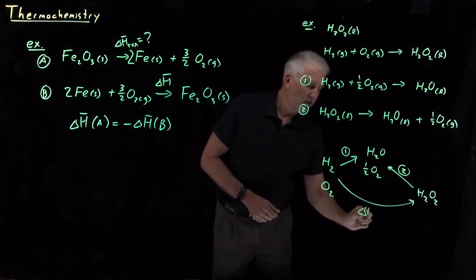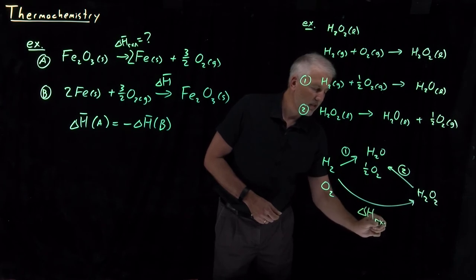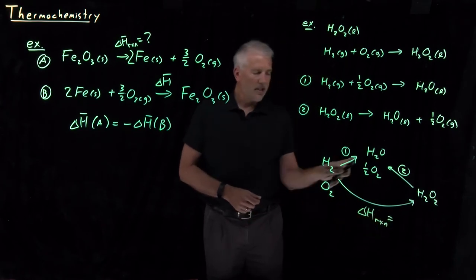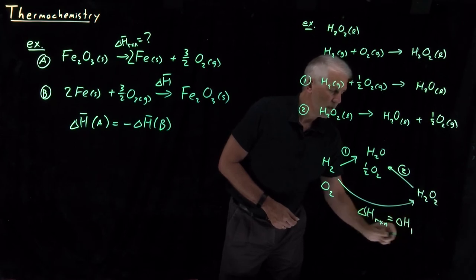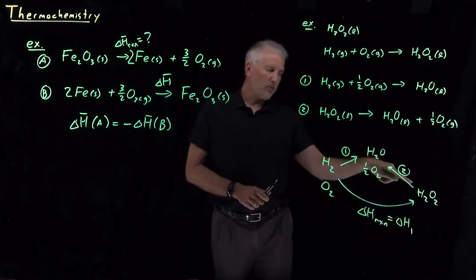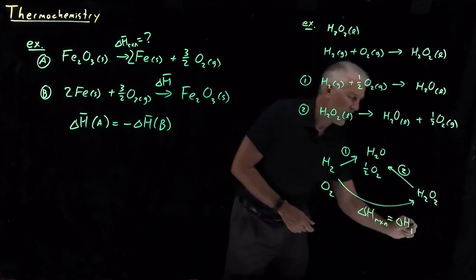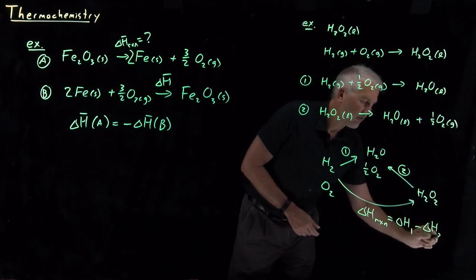So the delta H of this reaction that I'm interested in is the delta H of step one, and not delta H for step two, but the reverse of that, so a negative delta H of step two.